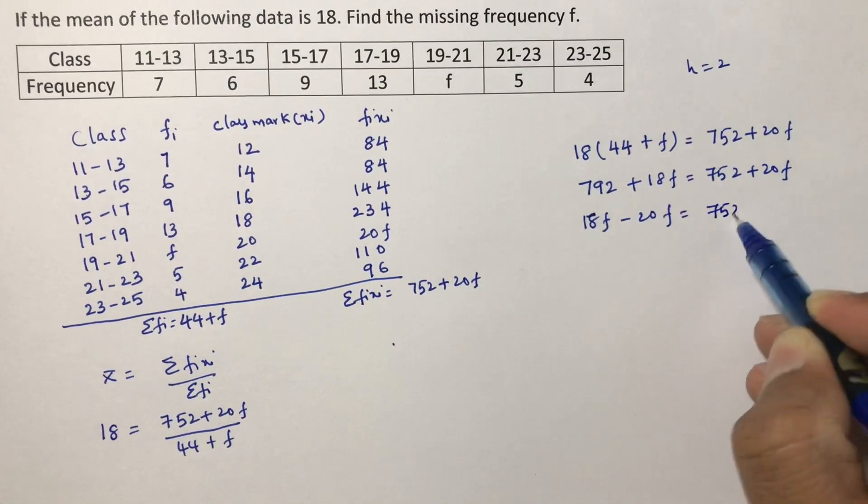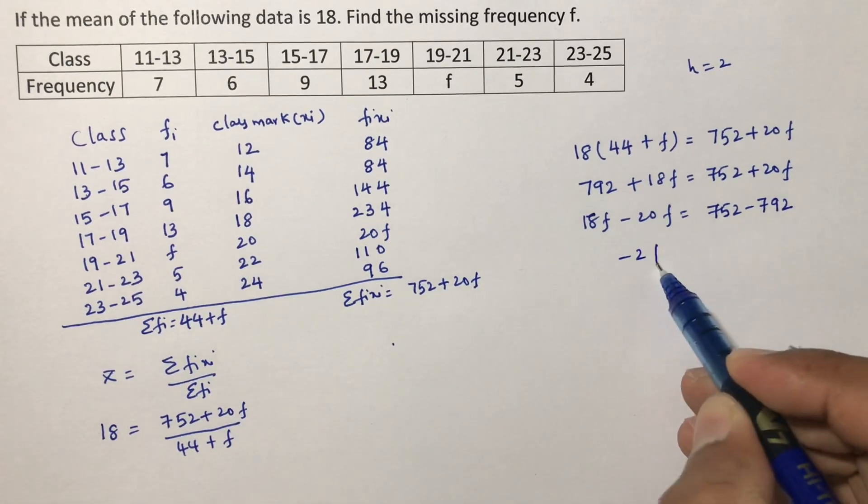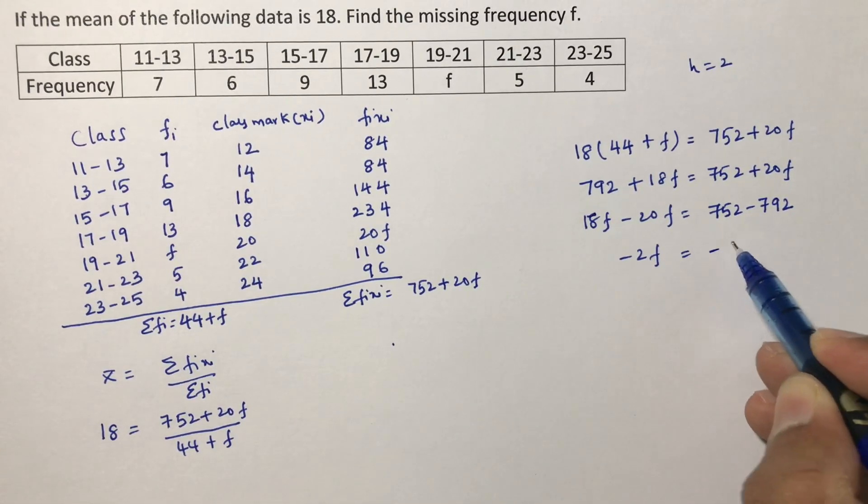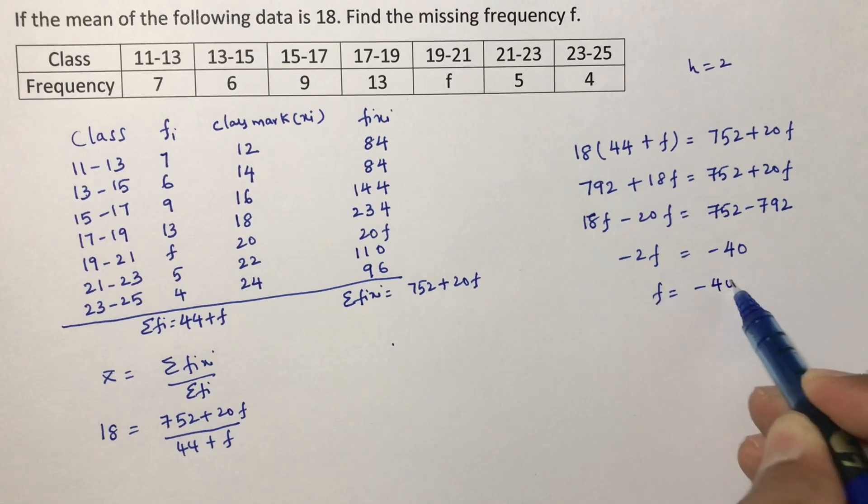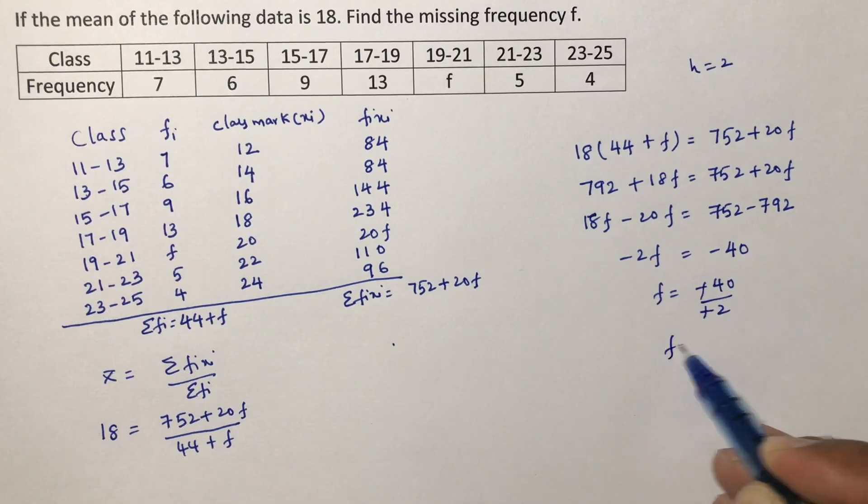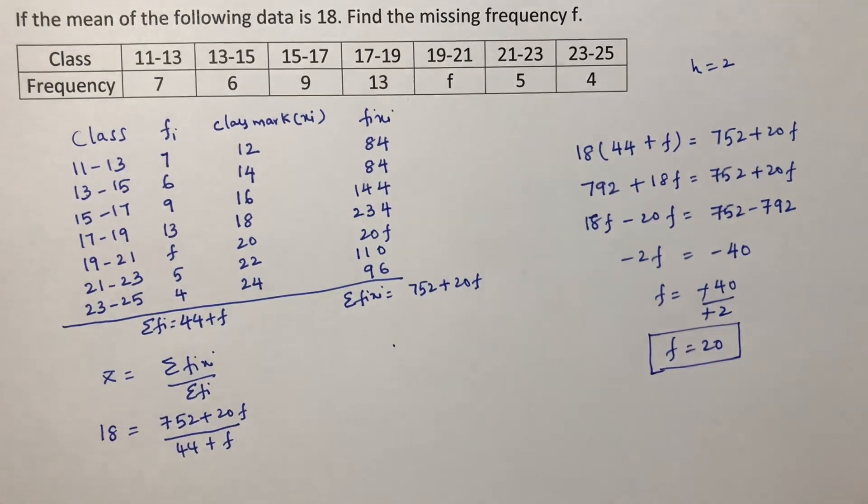Minus 2F equals minus 40. So F equals minus 40 by minus 2. The missing frequency F value is 20.